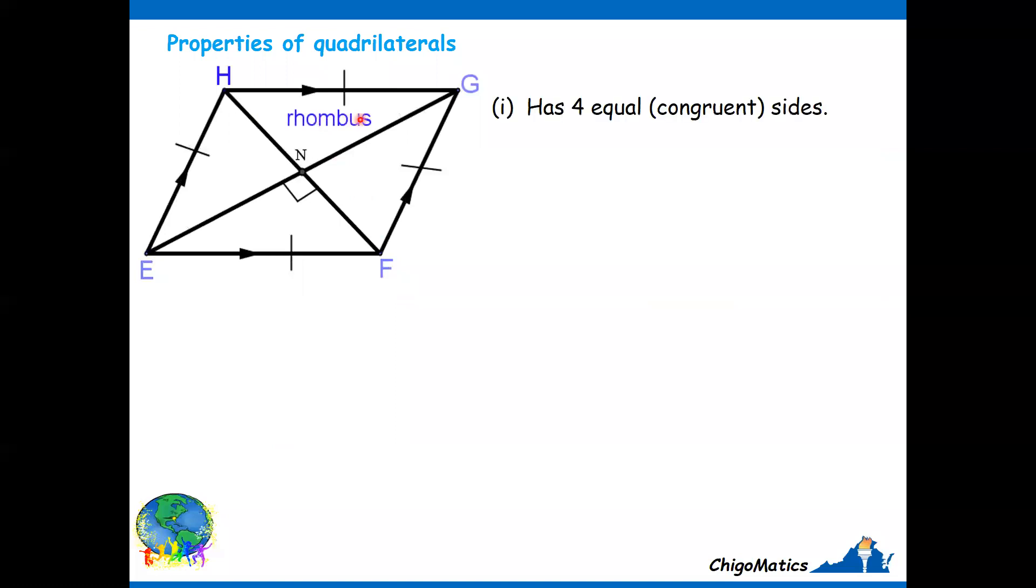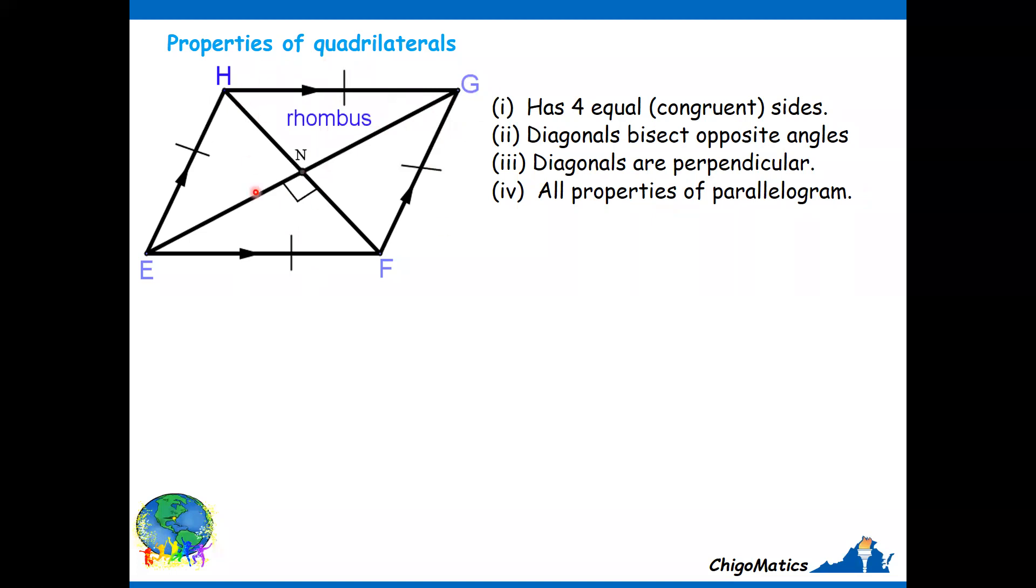We go to the rhombus. They have four equal sides. Then diagonals bisect opposite angles. That means EG bisects this angle and this angle. Then HF bisects this angle and this angle. And remembering that bisect means the angles are equal. Then diagonals are perpendicular, as shown with this right angle. Perpendicular means they meet at 90 degrees. All properties of parallelogram. That means with these three, you add all the properties of the parallelogram that we have seen. They are also satisfied in the rhombus.